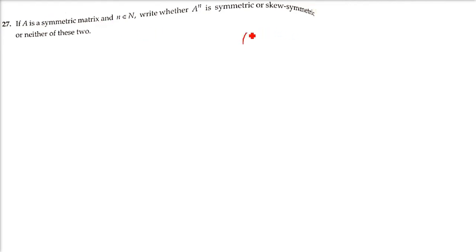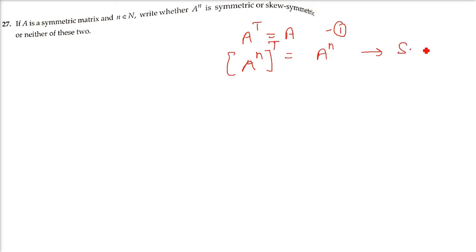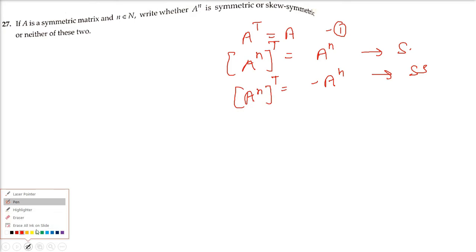Next: if A is a symmetric matrix and n belongs to the natural numbers, write whether Aⁿ is symmetric, skew-symmetric, or neither. Since A is symmetric, Aᵀ = A. We need to examine (Aⁿ)ᵀ: if it equals Aⁿ it is symmetric; if it equals -Aⁿ it is skew-symmetric.